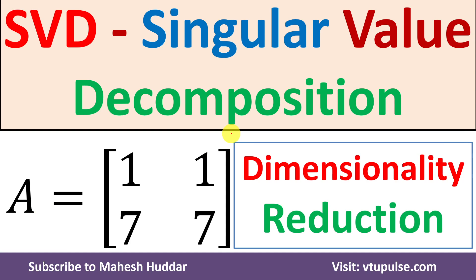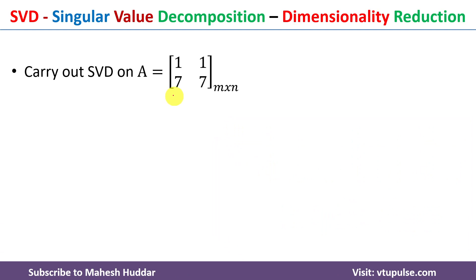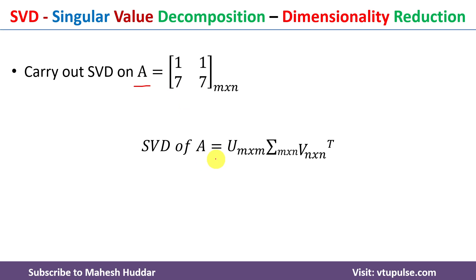Welcome back. In this video I will discuss Singular Value Decomposition, that is SVD, in machine learning with the help of a simple solved example. We have been given a matrix A with two rows and two columns. We need to find the decomposition of A into three singular matrices: U, Sigma, and V transpose, where U is of dimension m×m, Sigma is m×n, and V transpose is n×n. Once you multiply all these you get back the original m×n matrix.